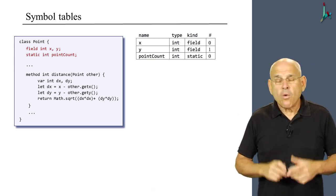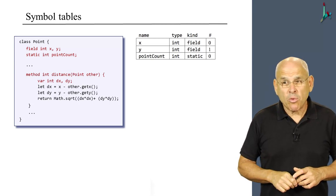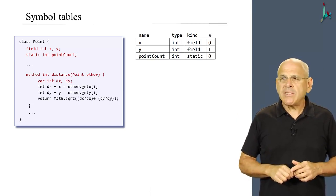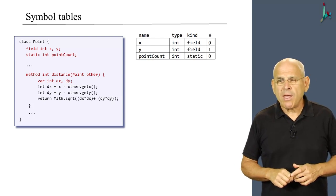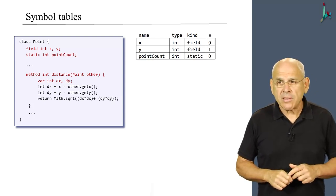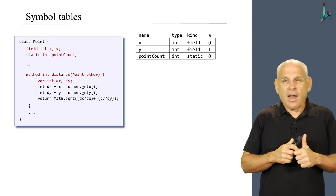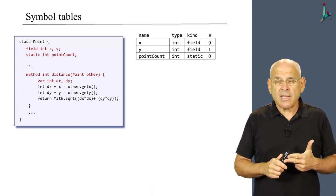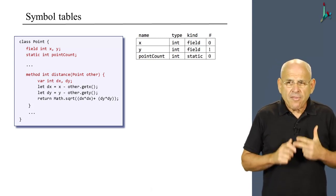Assuming that these are the only field and static variables in this class. Moving along, what about the subroutine that we see here? Well, if we look at it, we see what seems to be three variables. The first variable is other. It's an argument variable. And then we have two local variables, dx and dy.